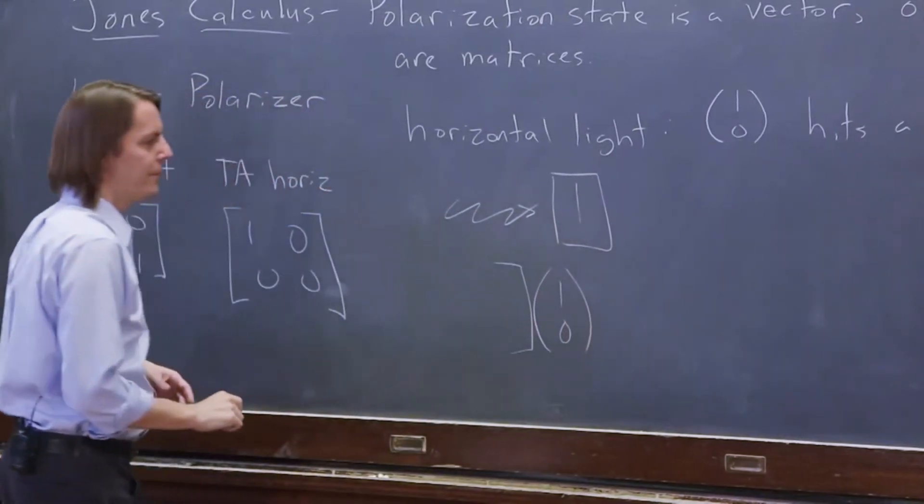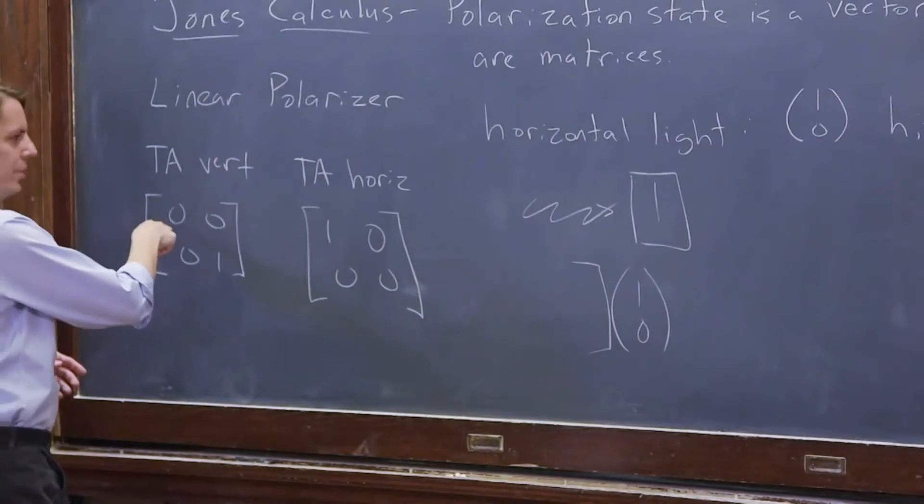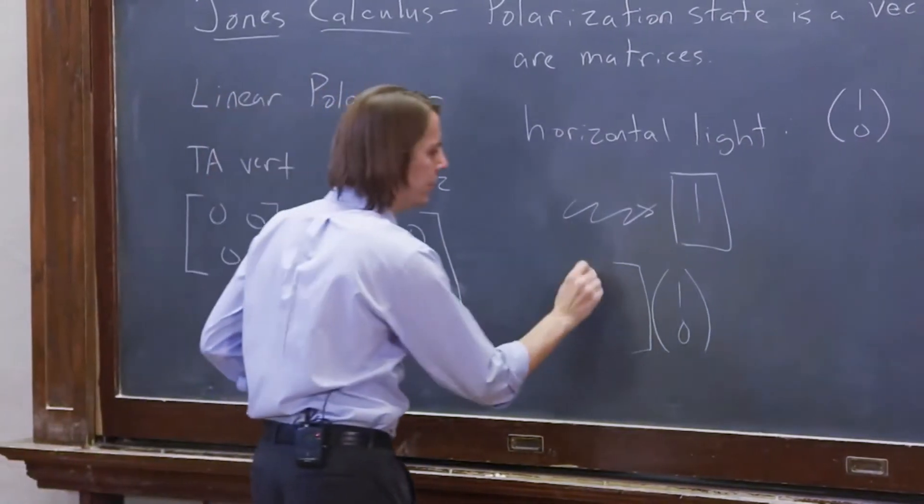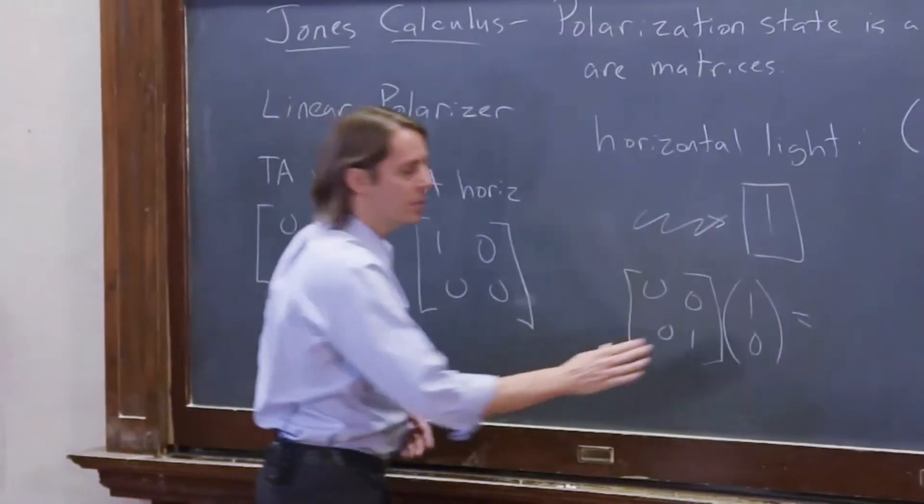In front of it, you write the first thing it hits, the matrix of the polarizer. If the polarizer is vertical, then it's 0, 0, 0, 1, like that. And you just see what that gives you.